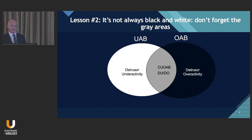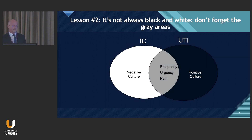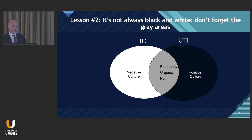Whether we diagnose these patients clinically or urodynamically, they may be more bothered by OAB symptoms, but the underactive bladder component may have a greater impact on our choice of treatment. What about IC versus UTI? Medicare doesn't allow a dual diagnosis, and IC is a diagnosis of exclusion — but that doesn't mean a patient with IC can't have a UTI. Patients with IC, the more attuned they are with their underlying condition, the more readily they can differentiate an IC flare from a true UTI.